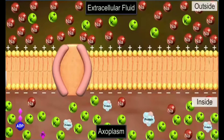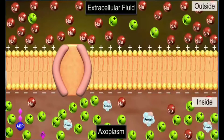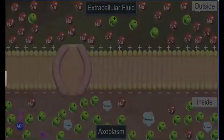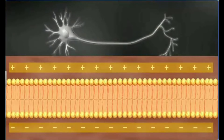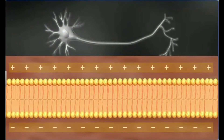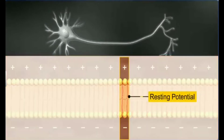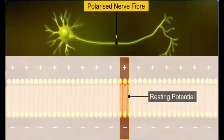This differential permeability is maintained by a sodium-potassium pump present inside the membrane. The sodium-potassium pump transports three sodium ions outside the cell for every two potassium ions that enter the cell. This electrical potential difference across the membrane in an unexcited nerve fiber is called resting potential, and the neuron is called a polarized nerve fiber.